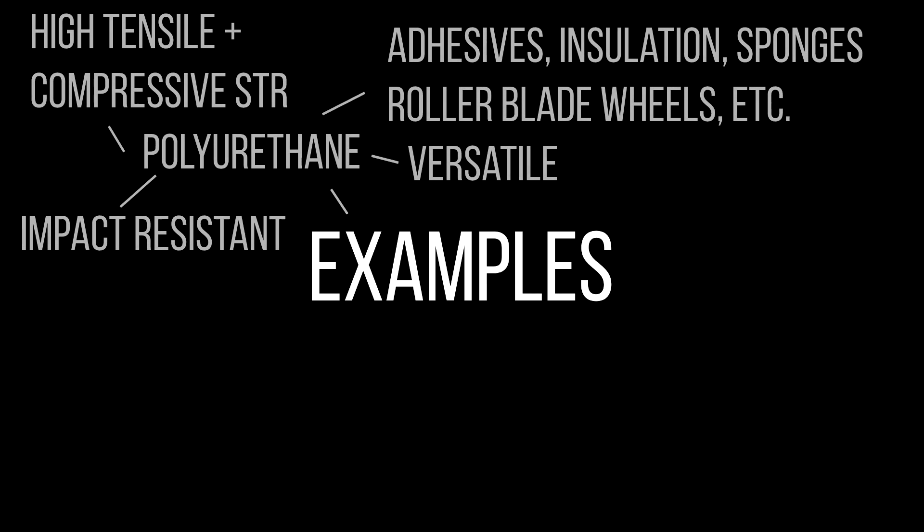Now, let's look at specific examples of different thermosetting plastics. Polyurethane is a thermosetting plastic that is available in a wide variety of forms. It can be tailored for a variety of applications, for example, use in sponges, rollerblade wheels, adhesives, coatings, car paints, insulation, etc. It has very good tensile and compressive strength, is impact resistant, has good electrical resistivity, good bonding properties, and good thermal insulation.